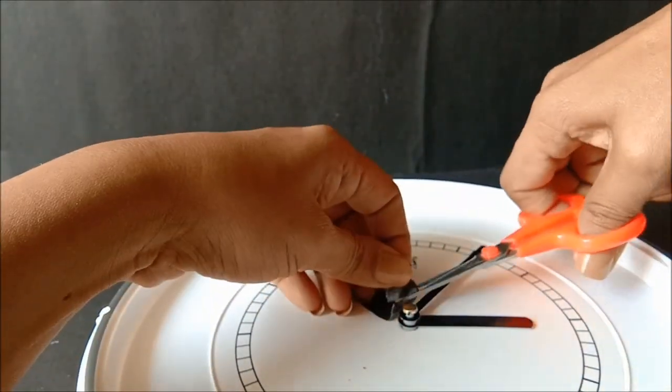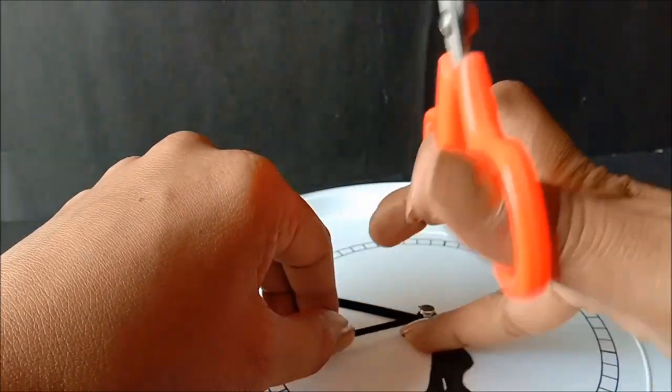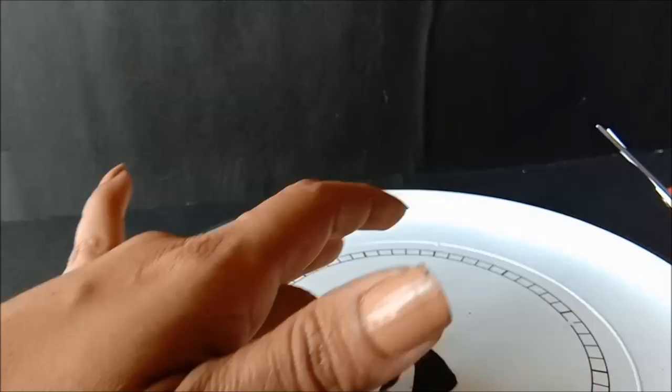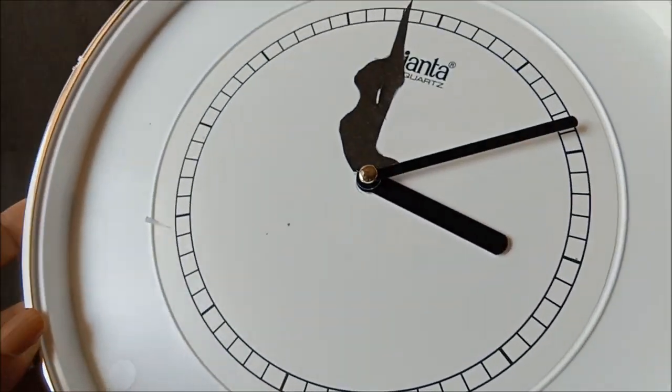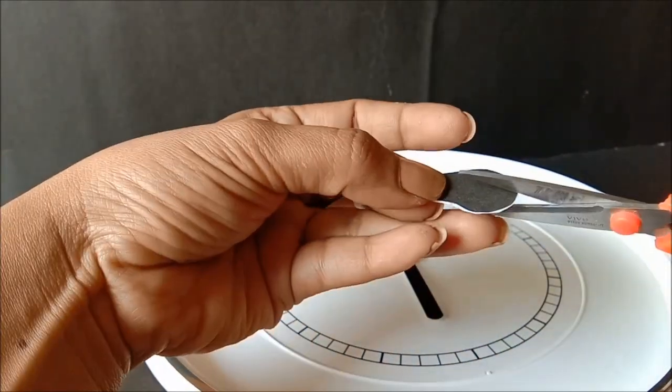Just cut the excess out. Once done, stick the legs on the hands of the clock.